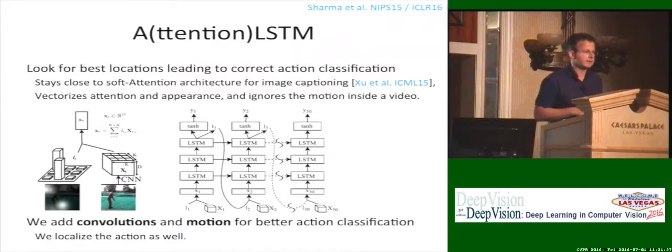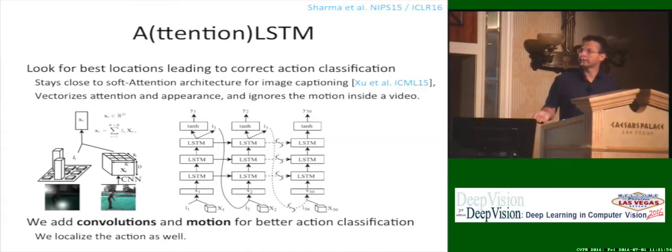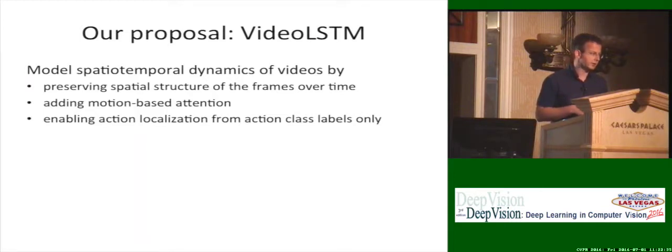We observe that this attention LSTM stays very close to the soft attention mechanism architecture of Xu et al, proposed for image captioning. But the video is not an image, so it needs to be treated slightly differently. What we will add is we add the convolutions inside the LSTM, and we will also use motion for better signaling of where the attention is happening. Our proposal is an architecture we call VideoLSTM. It models the spatiotemporal dynamics of video by preserving the spatial structure of the frames over time, adding an attention mechanism based on motion, in our case optical flow. We will enable action localization without the need for any bounding box annotation. So just a label on the video level on what the action is, and the approach will localize where it will happen.